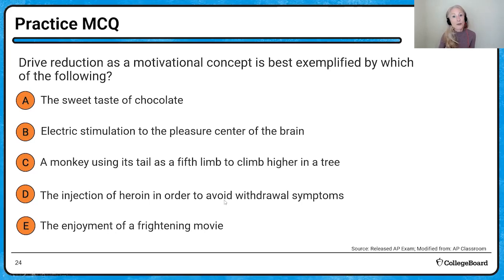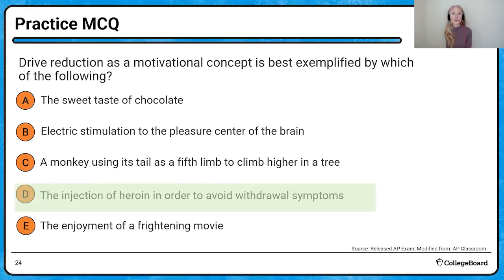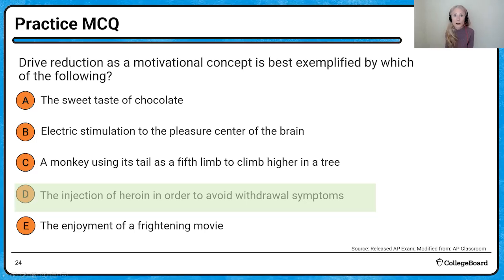The next question is about drive reduction. Usually when you hear drive reduction, it's a biological drive. In this case, somebody with a heroin addiction would need to inject heroin to avoid withdrawal symptoms — a really good example of drive reduction. If I look at the sweet taste of chocolate, that's an extrinsic reward — much more an incentive theory of motivation. The enjoyment of a frightening movie might be arousal theory.